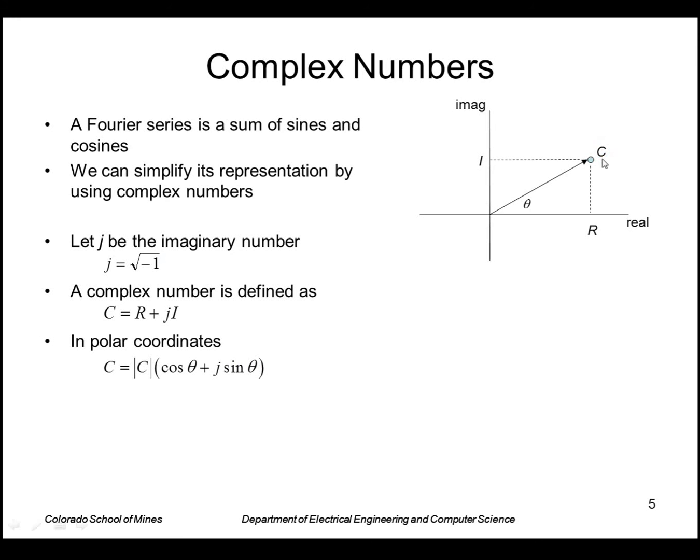In polar coordinates, this is a vector of length C and the angle theta with respect to the real axis. So you can write it in this form here. The key thing is that Euler's formula says that cosine theta plus j sine theta is e to the j theta. That allows us to go from the explicit sines and cosines to the exponentials.